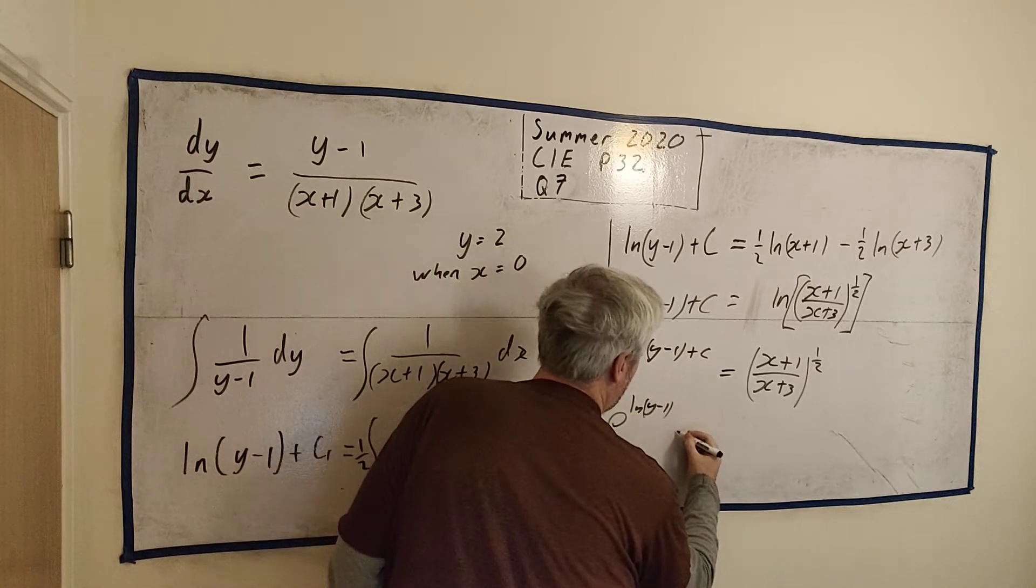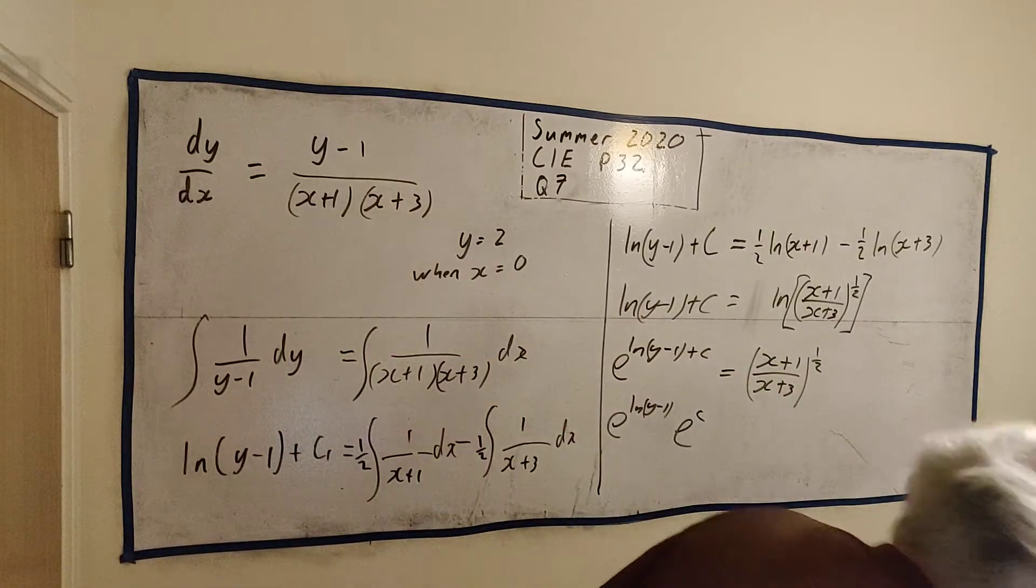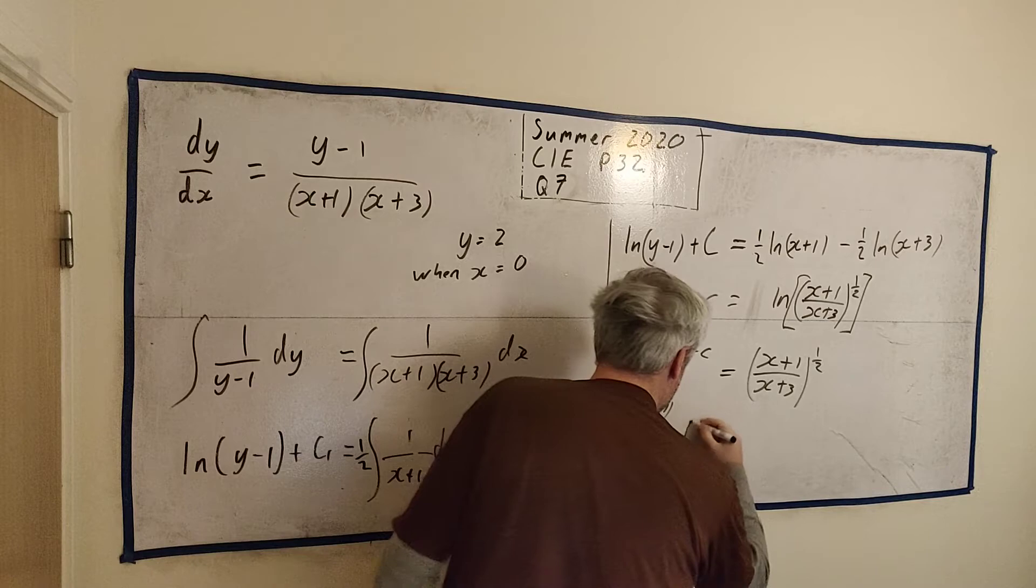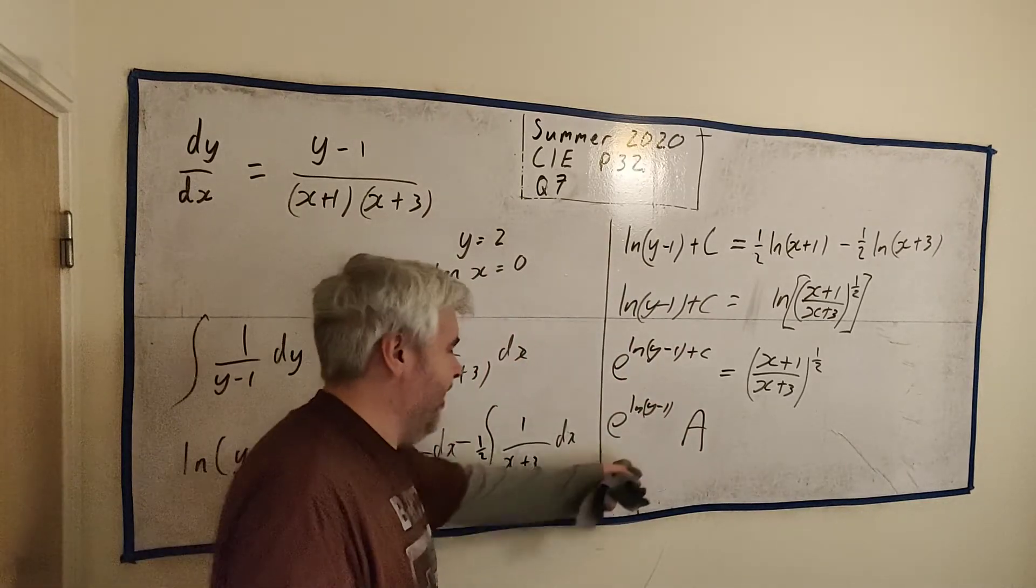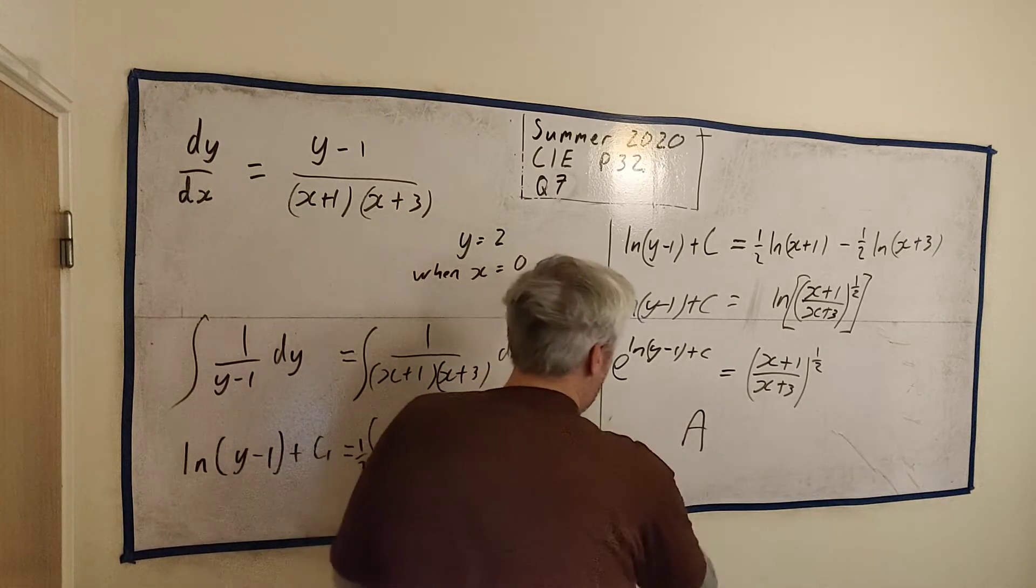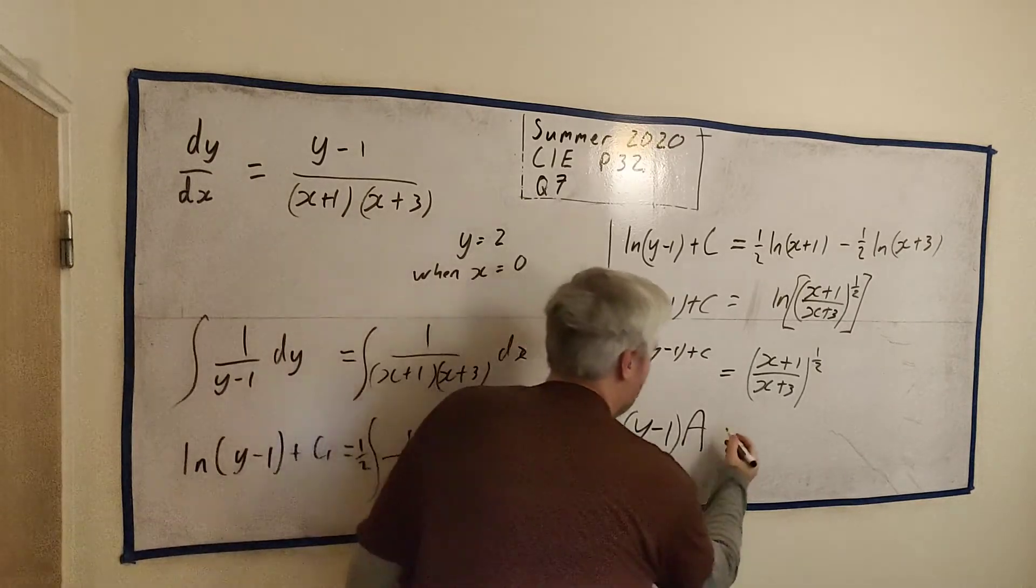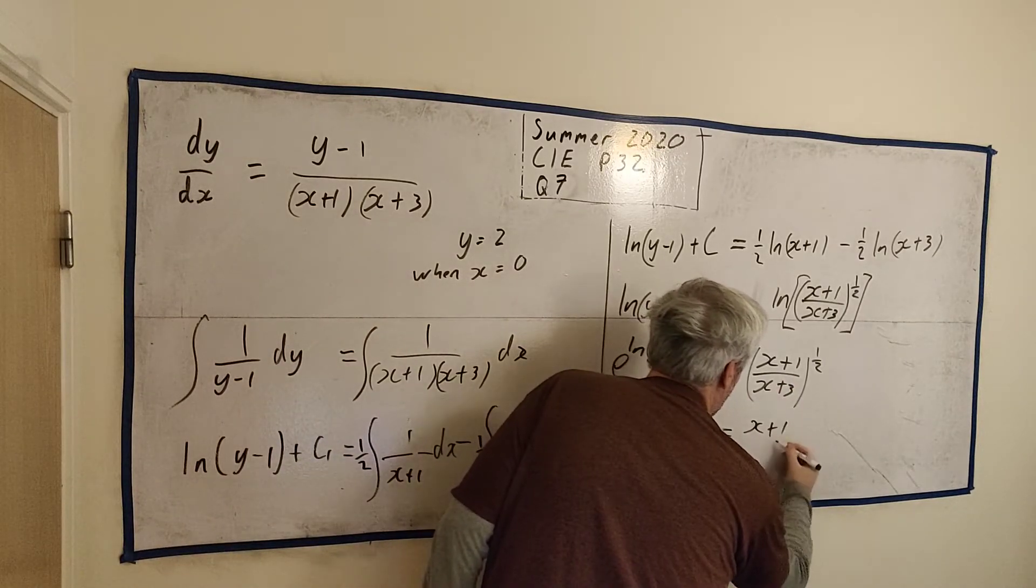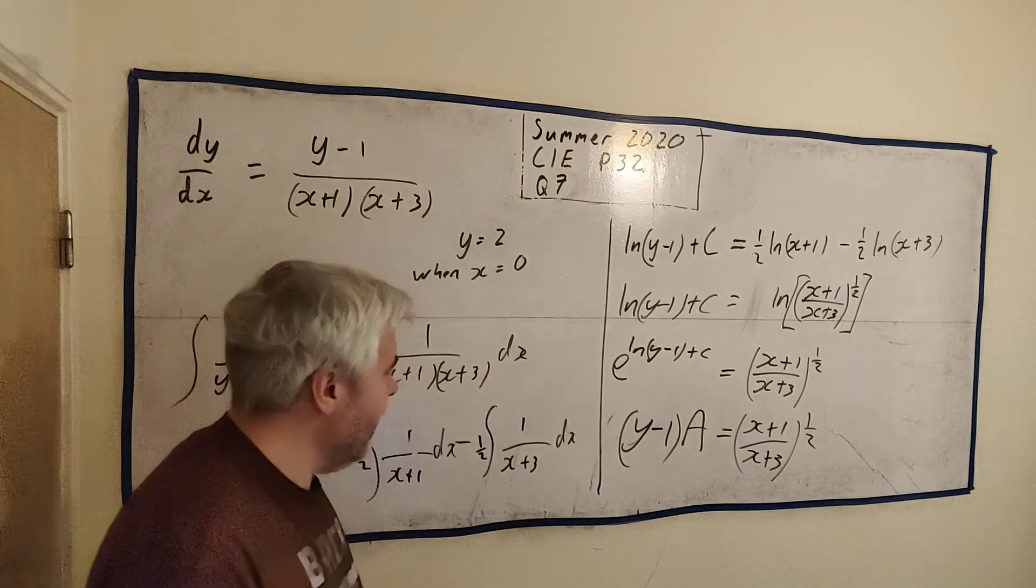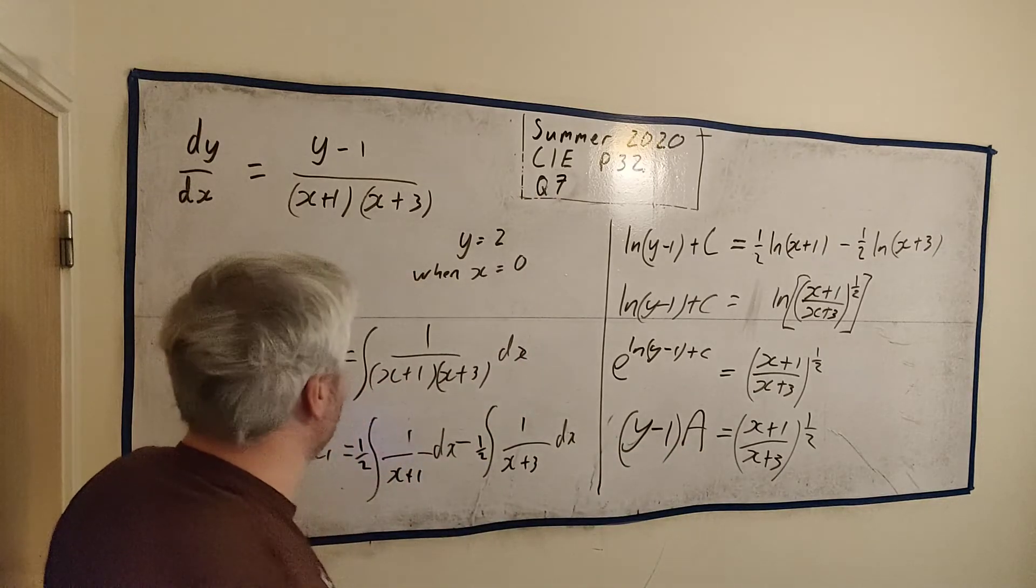This right-hand side is e to the natural log y minus 1 in a straight-order, multiplied by e to the c. e to the c is just another constant, it's just another constant. So we'll often rename this, it's okay if you leave it, but we often just rename this as a. Another constant. Any letter you want really works here. e to the power of natural log of something they destroy each other. So we're just left with y minus 1 multiplied by a is equal to x plus 1 over x plus 3 to the power of a half. That's what we're nearly done. We just want y equals, remember. The problem is this a. We don't want this a. So we would like to solve that at some stage. I might as well solve it now.